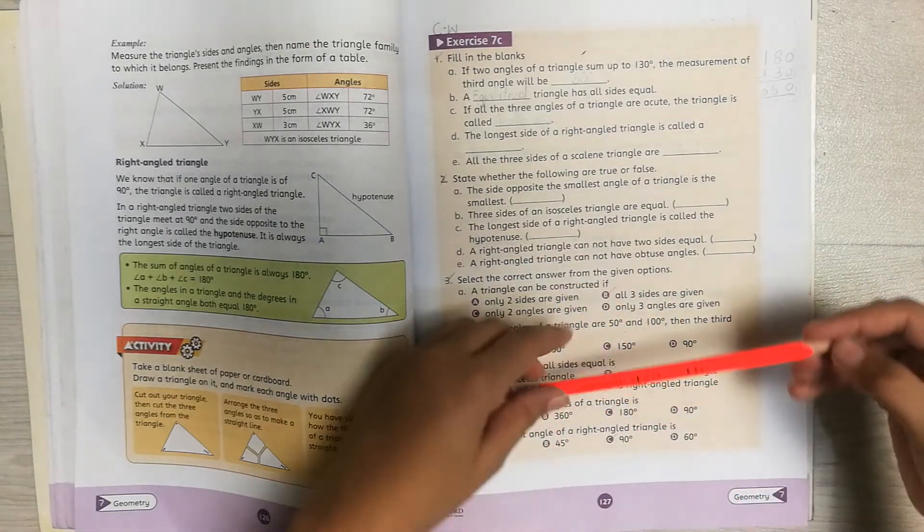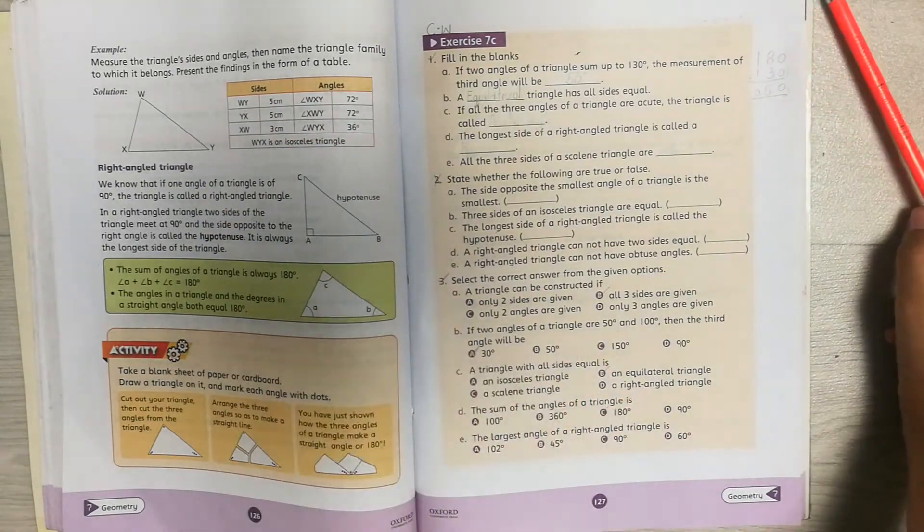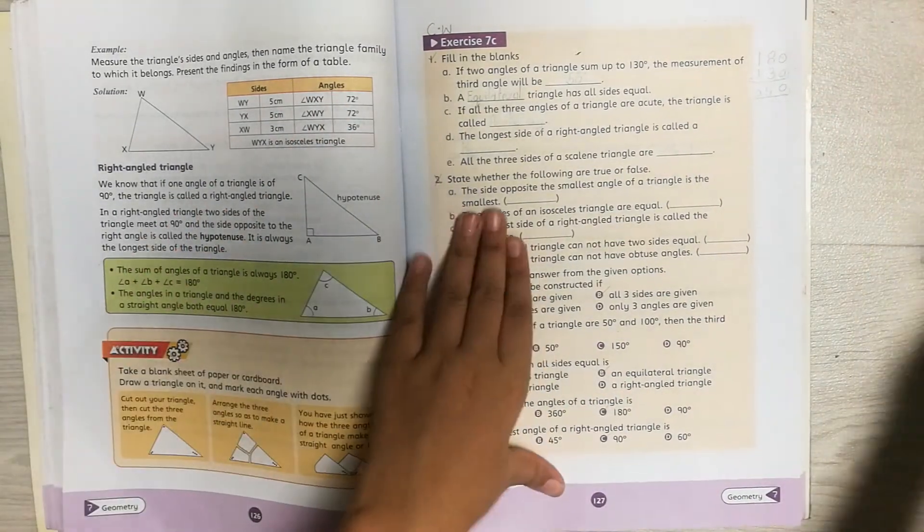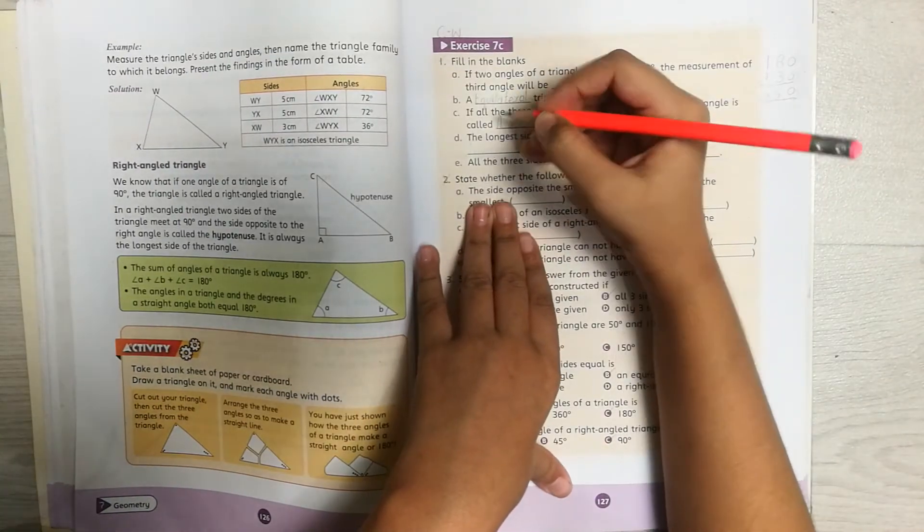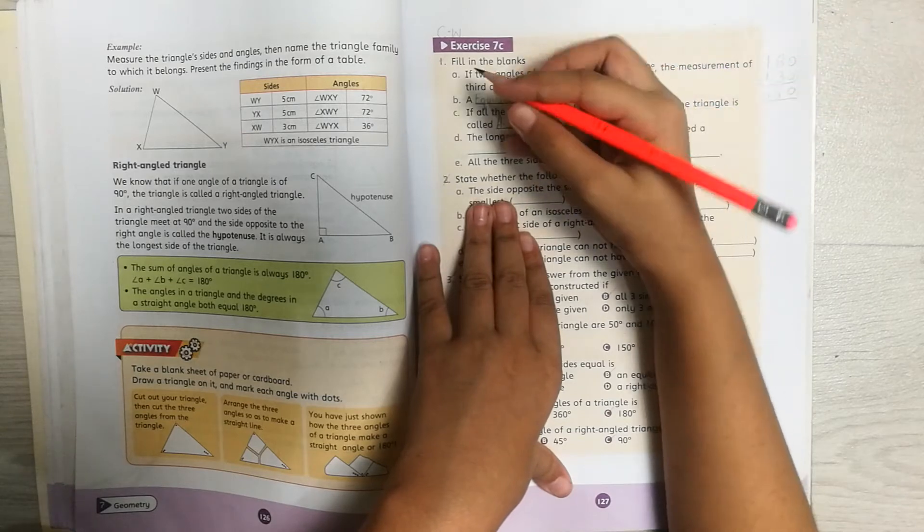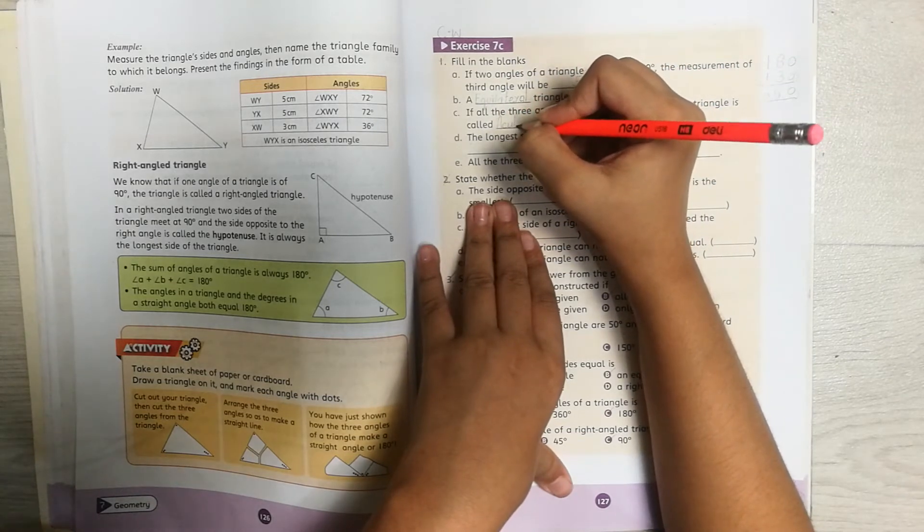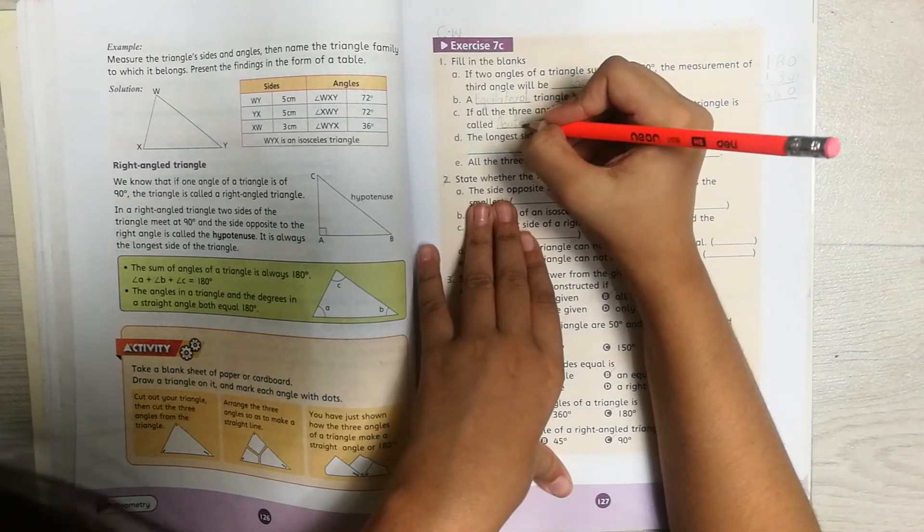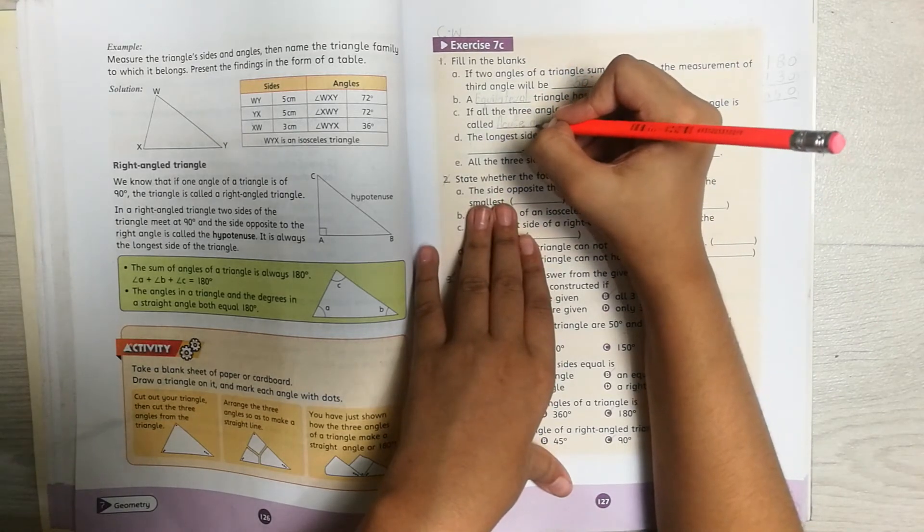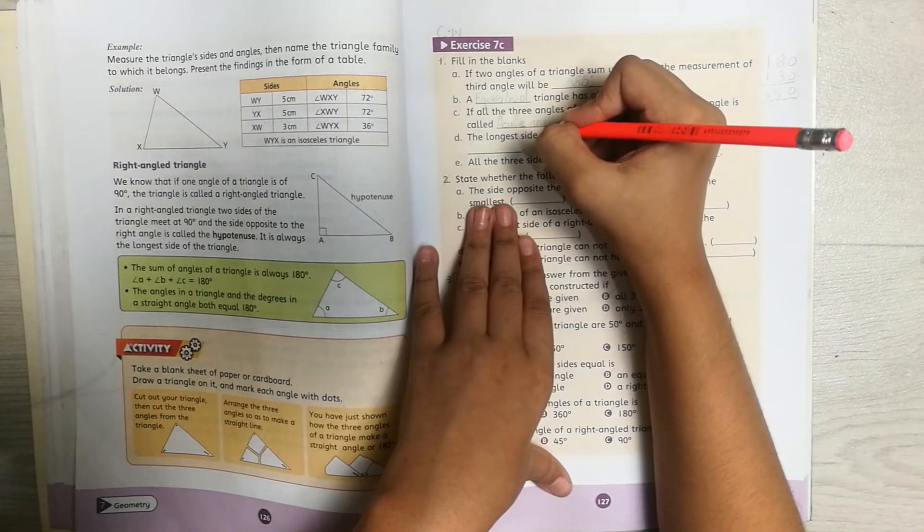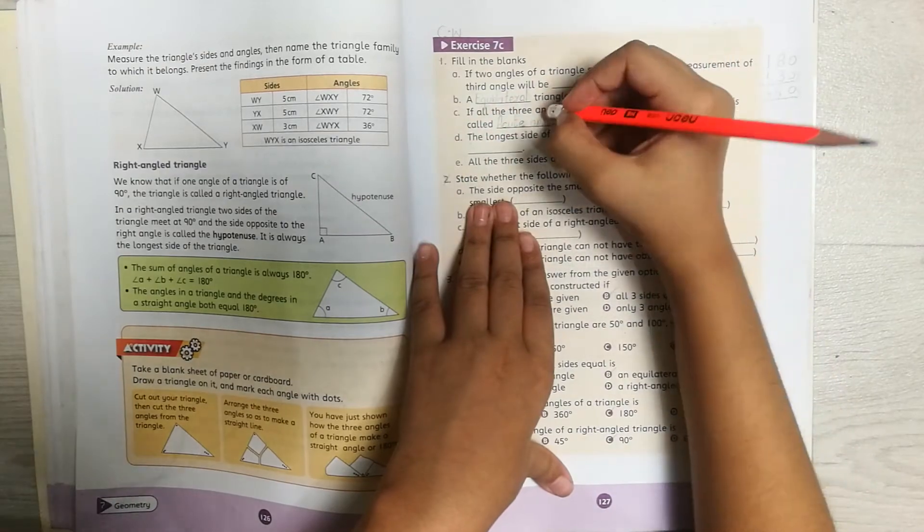I will also tell you about acute triangles in the next video. We write acute angle triangle. Since we don't have that much space to write triangle, you can also just write acute angle.